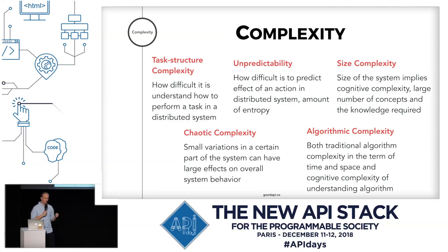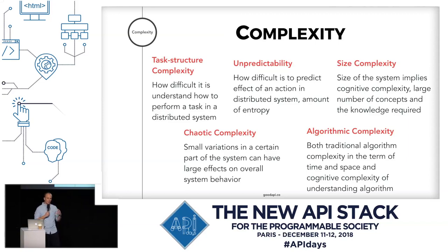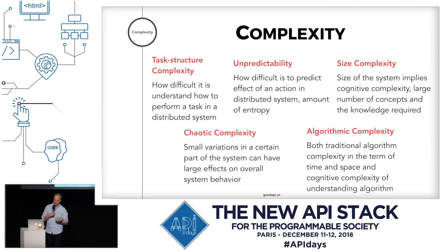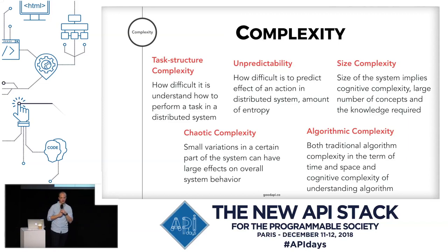First is task structure complexity — how difficult it is to take action and achieve something with a distributed system. Second, unpredictability — you don't know the effect of your action; when you change one component, how does it affect others? Third, size complexity — the simple problem of scaling, the number of components. Fourth, chaotic complexity — the butterfly effect, where you change something and something on the other side of the planet explodes. Fifth, algorithmic complexity, both in the traditional math sense and cognitive — how difficult it is to understand the algorithm.